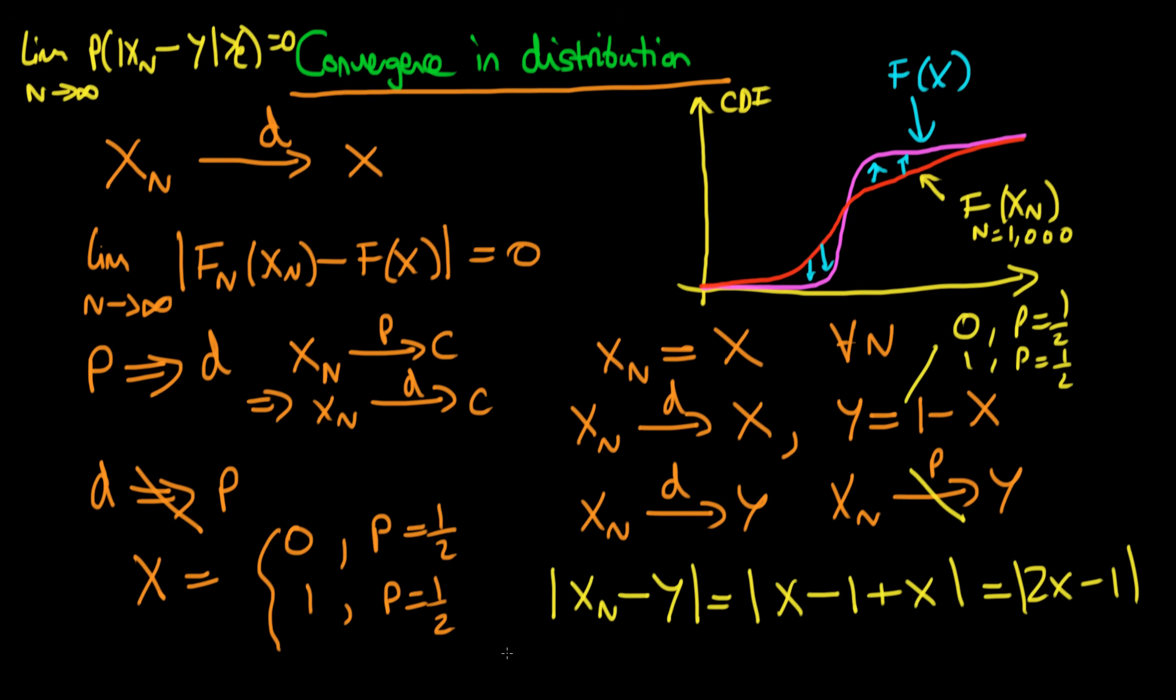And we can see for the case when X equals 0 that we're going to have on the right hand side that the modulus of Xn minus Y is equal to the modulus of minus 1 which is just 1. And also when X equals 1 we're going to have that the modulus of 2X minus 1 is equal to 1 as well.